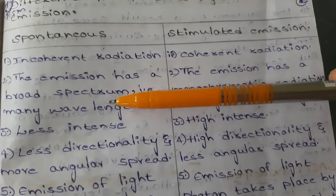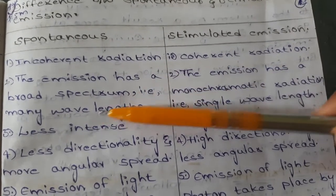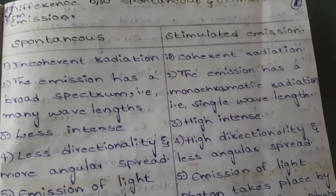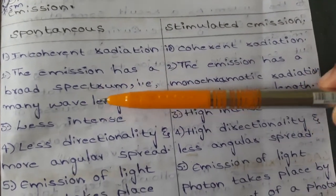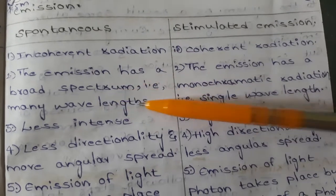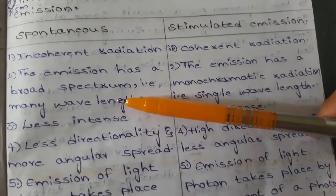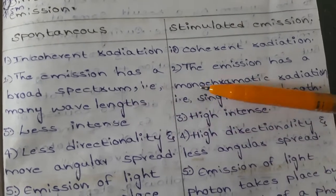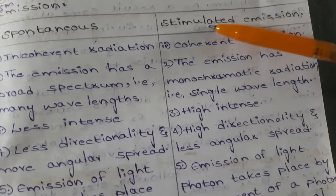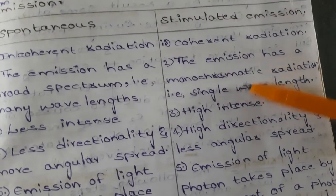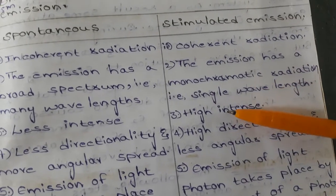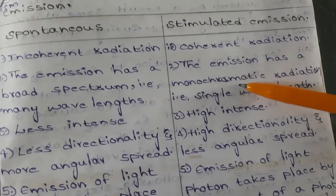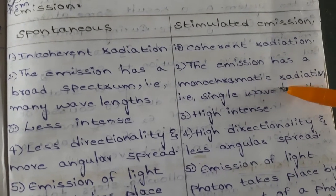The second point of spontaneous emission: the emission has a broad spectrum, that is, many wavelengths. For stimulated emission, the emission has monochromatic radiation — that is, a single wavelength.